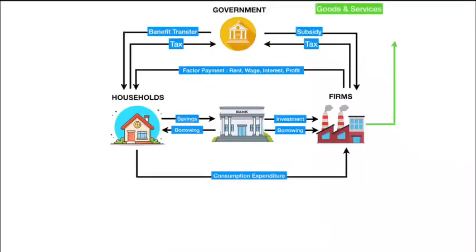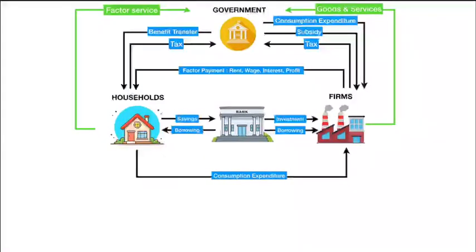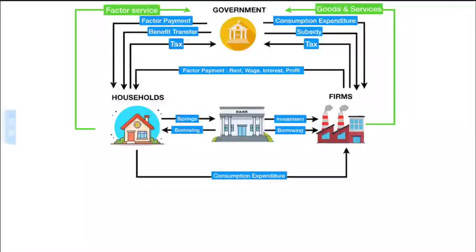Again, in order to function, the government needs products and services like office buildings, furniture, computers, and a lot of other things, and these are provided by the firms. In return, the government has to pay money, what we call government consumption expenditure. On the other hand, to run the government, it needs manpower like clerks, police, bureaucrats, and a lot of other services. These are provided by the household, and in return the government pays salaries, wages, and other types of payment, what we call factor payment. This example is called a three-sector economy because there are three sectors: the household sector, firms or business sector, and the government sector.